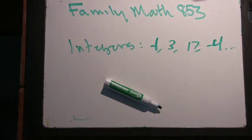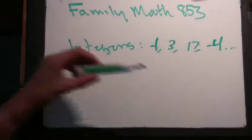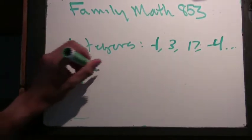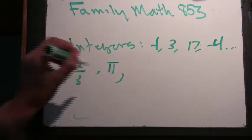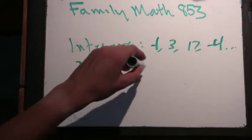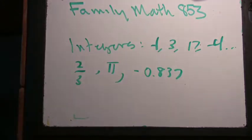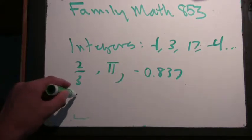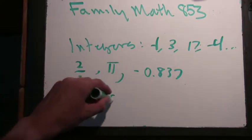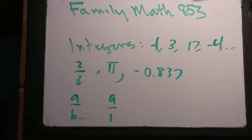What's something that's not an integer? Something like 2 thirds, pi, minus 0.837. Yeah, integers are basically rational numbers but instead of a over b, they're a over 1. Good definition.